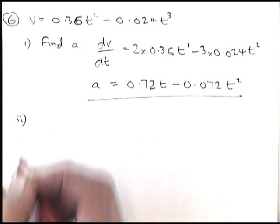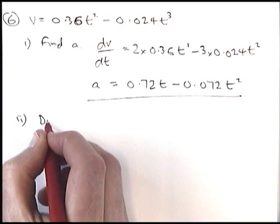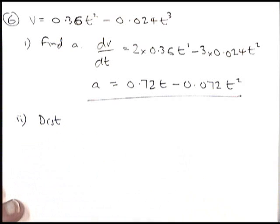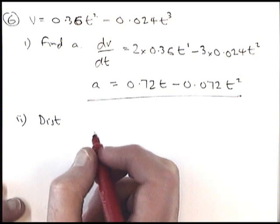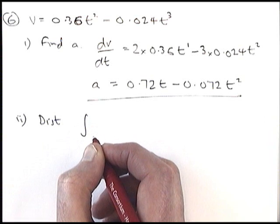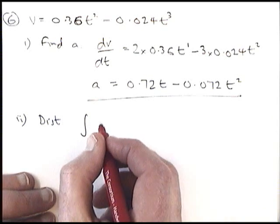Part 2: Find the distance travelled. The distance is the integration of velocity. So what we need to do now is integrate our velocity expression.